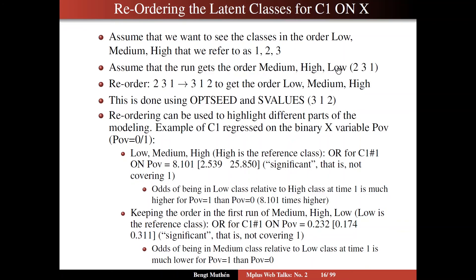Now if you keep the order of the first run, which is the medium, high, low order, that could be of interest too, where low is the reference class. We're saying then that the odds ratio for being in class 1 of C1, in the regression on poverty, that odds ratio is 0.232. It's also significant. Does not cover 1. That is, the interval does not cover 1. It just happened to be lower than 1. So we say that the odds of being in the medium class, which is the first one here, relative to the low class at time 1, is much lower for poverty than not being in poverty, which makes sense.